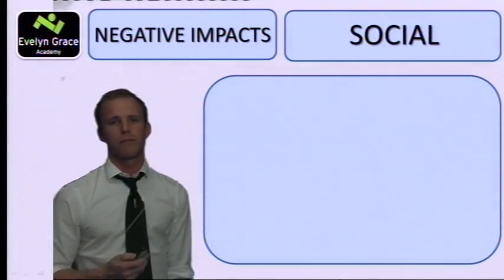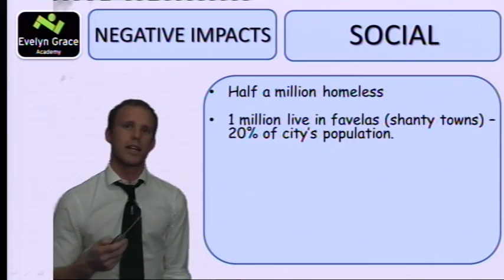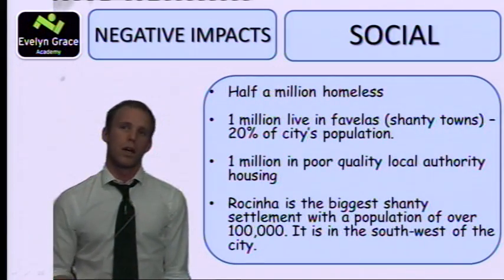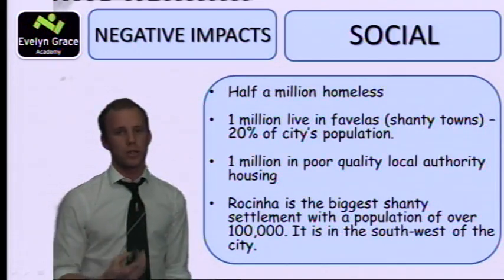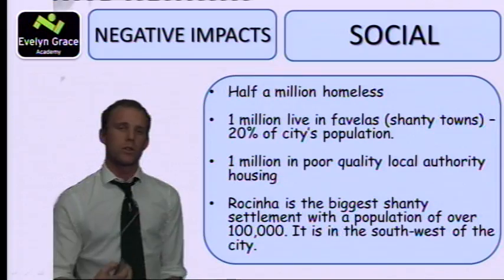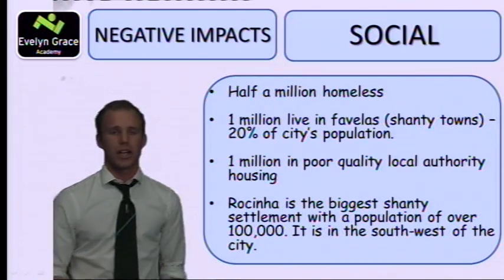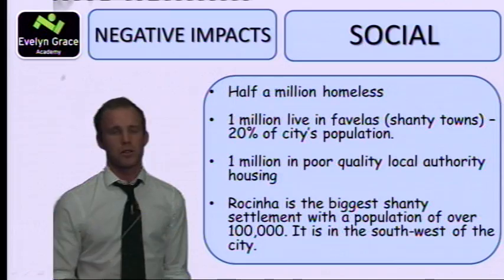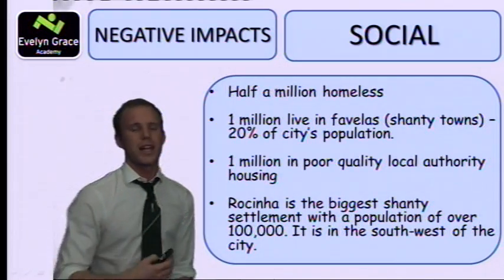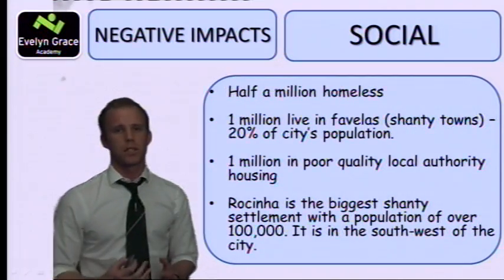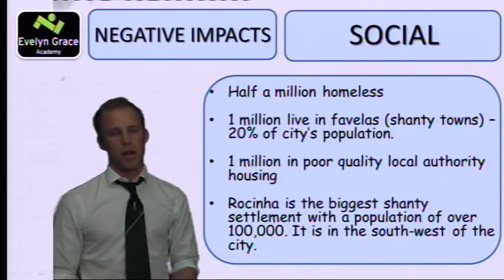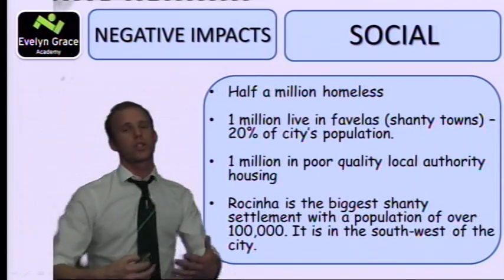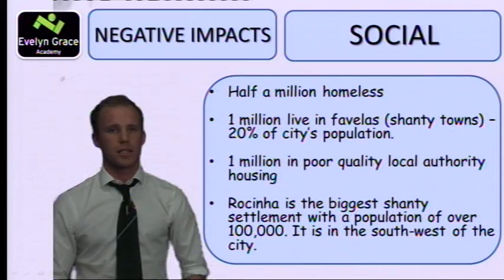Now the social impacts for Rio, mostly to do with housing. Half a million people are homeless. A million people live in favelas — about 20% of the city's population. A million live in poor local authority housing provided by the city itself. Rocinha is the largest shantytown settlement with over 100,000 people in the south-west of the city. Negatives of shantytowns include crime, overcrowding, disease spreading, and lack of sewage. One social negative can lead to environmental and economic negatives as well.